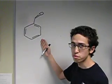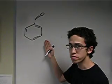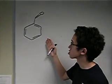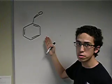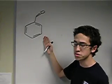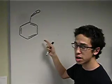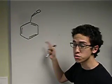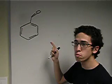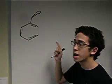Alright, here's our final example. Previously, we've seen charged molecules and drawn resonance structures for them. But now this benzaldehyde is a neutral structure, so it's a little bit more difficult.